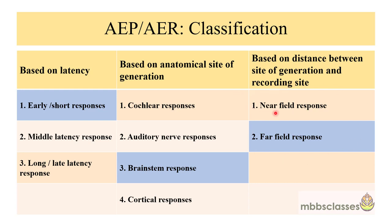The near-field response means that the recording electrode is on the site very close to the site of generation. An example is in electrocochleography when the recording electrode is placed over the promontory through the transtympanic route. Another example of near-field response is when auditory evoked potentials are used in the intraoperative period. ABR is a far-field response because the recording electrodes are placed far away from the site of origin and are usually placed on the scalp.